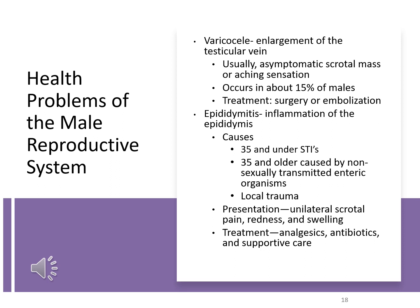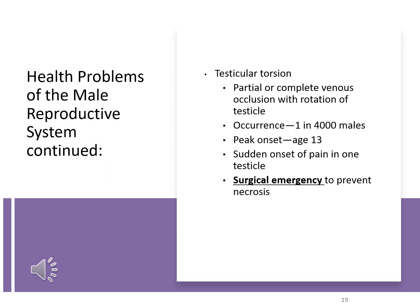If epididymitis is found in people over the age of 35, it's usually from a bacterial infection or local trauma. These patients will have lateral pain, scrotal pain, redness and swelling, and will require antibiotics, analgesics for pain control, and need to be careful with lifting and positions. Testicular torsion is either the partial or complete occlusion of the vein within the testicle and is a surgical emergency to prevent necrosis. It typically occurs around age 13, with a sudden onset of extreme pain on one testicle that may or may not be swollen.